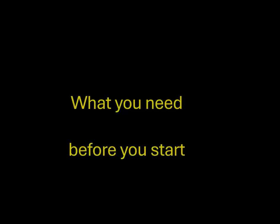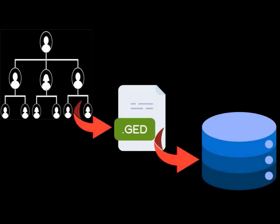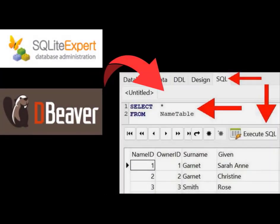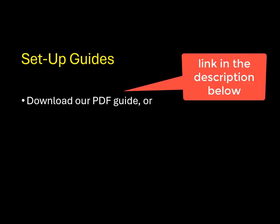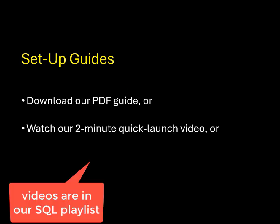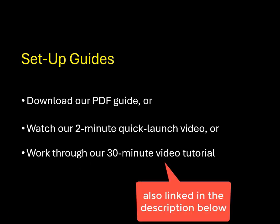There are some steps to complete before you create your report. First, export your family tree to a GEDCOM file. Then install the free RootsMagic application and use it to convert your GEDCOM file into a database. You then install a SQL browser and write SQL scripts to run against your tree database. We have a PDF guide to download with all the steps and links, a two-minute quick launch video, or a 30-minute tutorial for beginners to SQL.